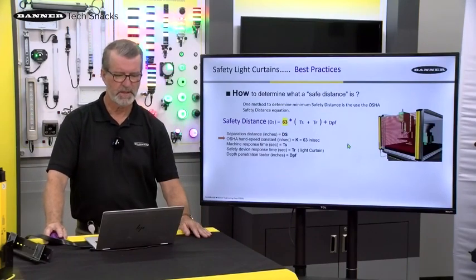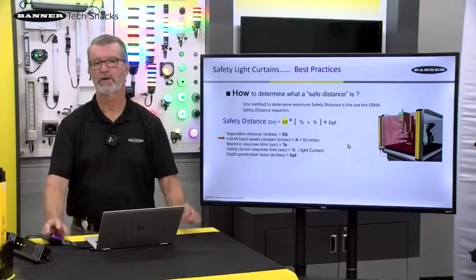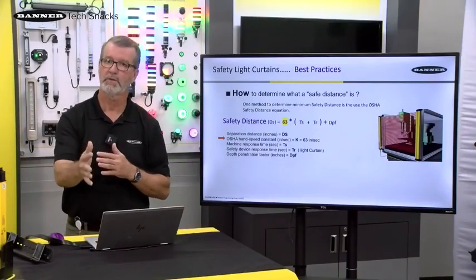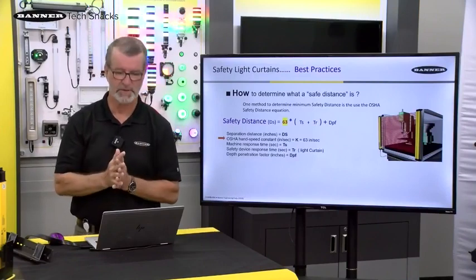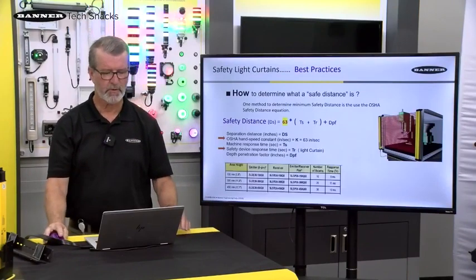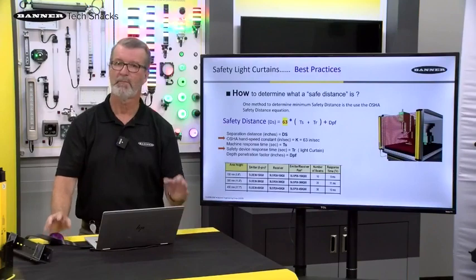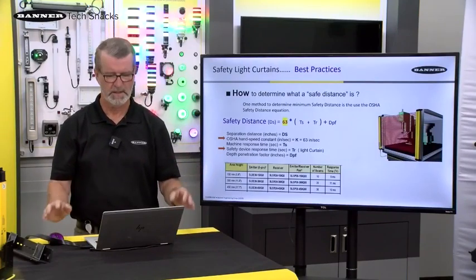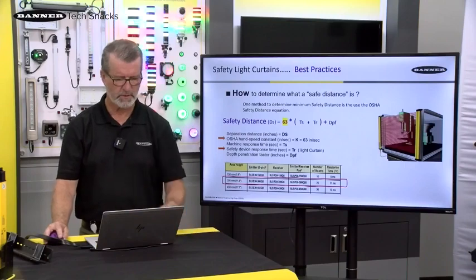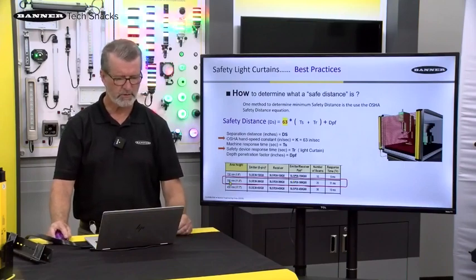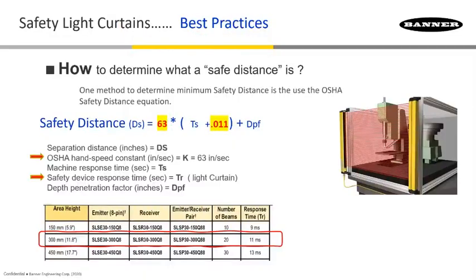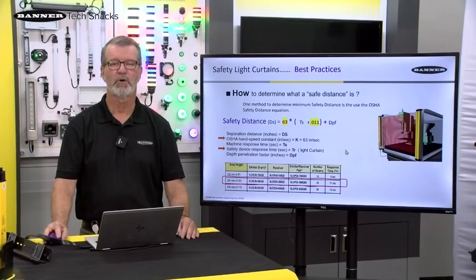For example, under OSHA, there is a constant as far as the speed that somebody is either reaching through a curtain or falling through a curtain at 63 inches per second. That's part of the formula. Next, depending on the model of the light curtain used, there's going to be a stated response time. Let's choose this one here — it's a 300-millimeter light curtain, and it's going to have an 11-millisecond response time. Let's put that in there in seconds as 0.011.